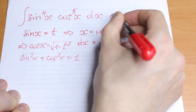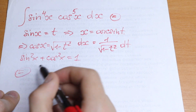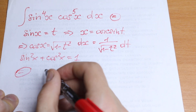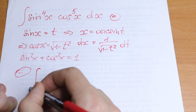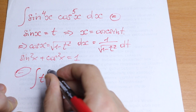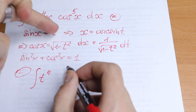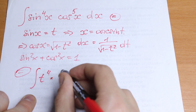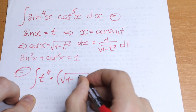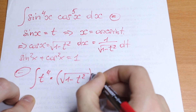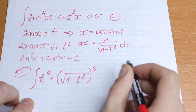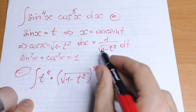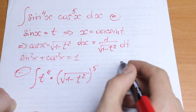Now let's plug all of these elements into our integral. We will have the integral of t to the fourth power — because we have sine to the fourth power — times the square root of 1 minus t squared to the fifth power.